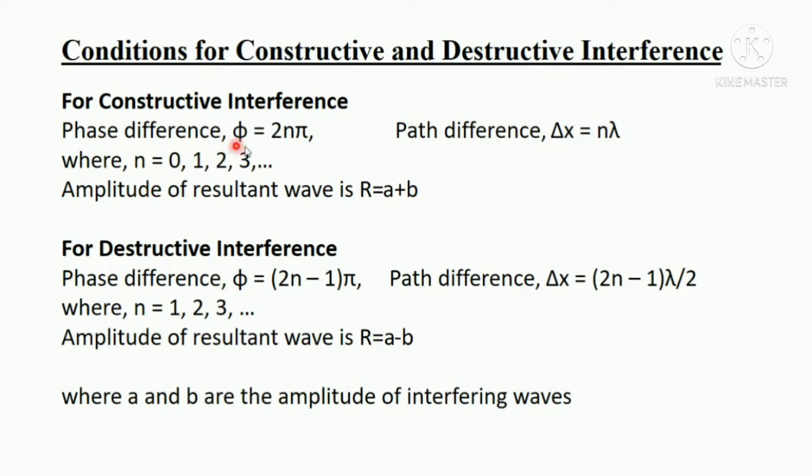Let us see what are the conditions for constructive interference. The phase difference for it should be 2nπ and the path difference should be integral multiple of λ, where n = 0, 1, 2, 3. The amplitude of the resultant wave at this moment is a+b where a and b are the amplitude of interfering waves. For destructive interference, the phase difference should be odd integral multiple of π and path difference (2n-1)λ/2. The amplitude of resultant wave becomes a-b.